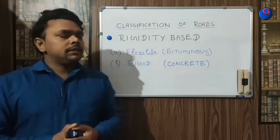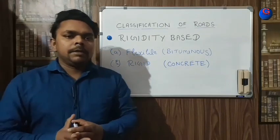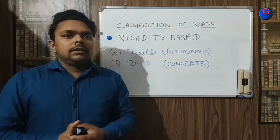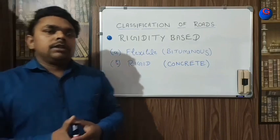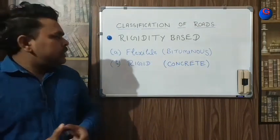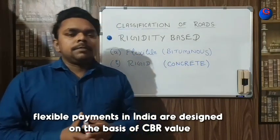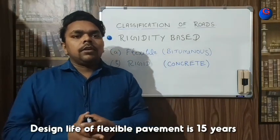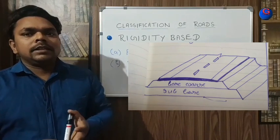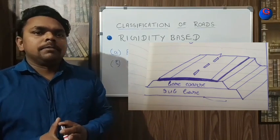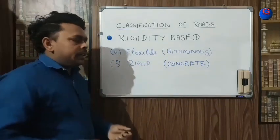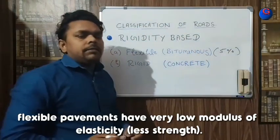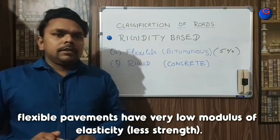The third classification is based on the rigidity of the pavement: flexible pavements and rigid pavements. These are the most popular roads in the world — 80 percent of all roads are made with flexible or rigid pavements. Flexible pavements, also called bituminous pavements, derive their strength from the interlocking cohesion of aggregates present in the pre-mix carpet, SDBC, or DBM layers. A minimum five percent bitumen content must be maintained in flexible pavements.